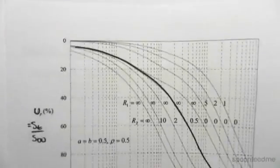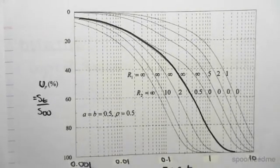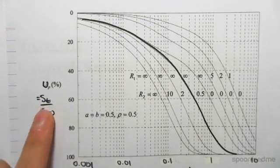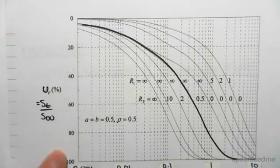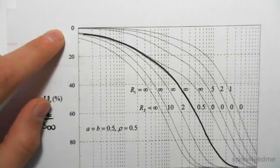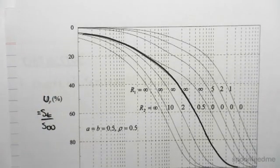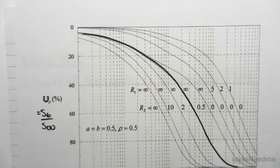So, we're going to be given a graph. This is a graph which plots the degree of settlement U. U is the settlement at any time over the final settlement, so it ranges from 0% to 100%. This is a point of 0 settlement, and this would be a point of 100% settlement down here.